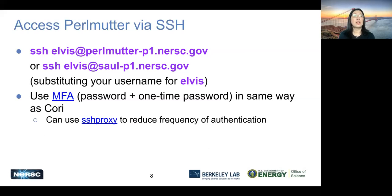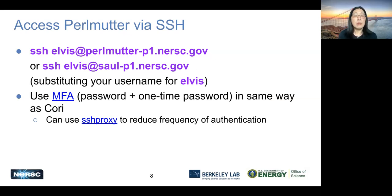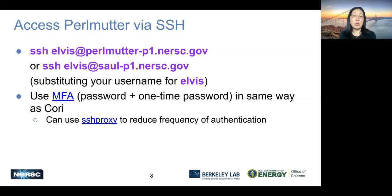How to access Perlmutter: you can access perlmutter-p1 or saul-p1. Saul is the first name of Saul Perlmutter, who our system is named after — a scientist at Berkeley Lab who won the Nobel Prize. You still use MFA, which is multi-factor authentication — password plus one-time password — in the same way as you do on Cori. We do recommend you use SSH proxy to reduce the frequency of authentication. The default time is 24 hours, so you don't have to type your password or MFA again and again within 24 hours.